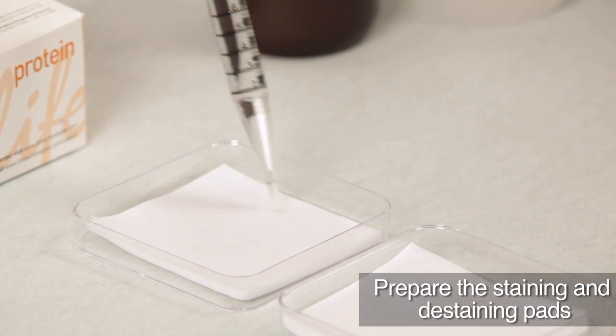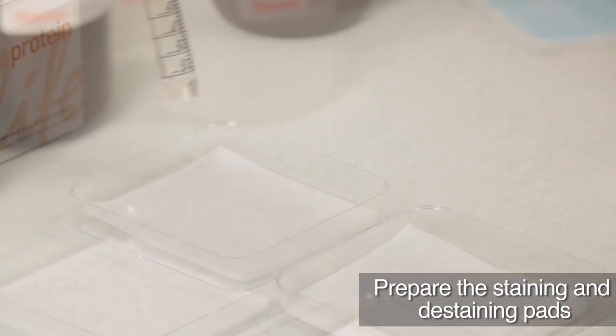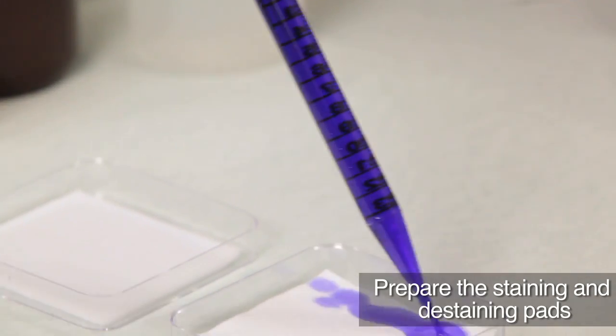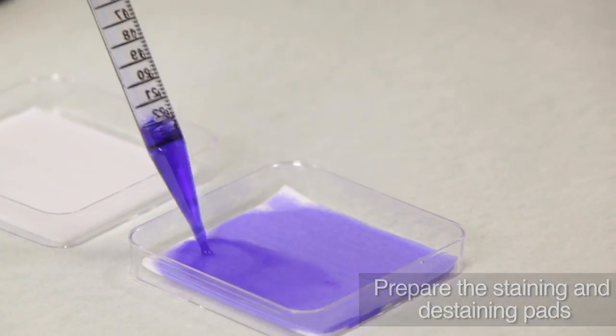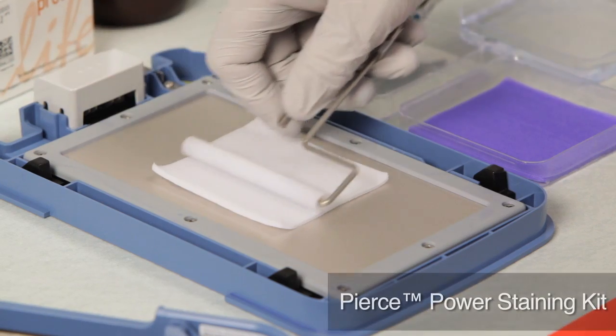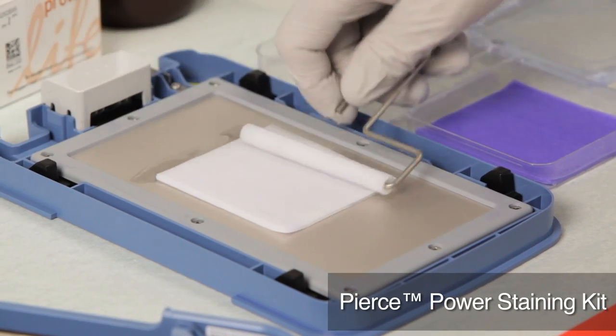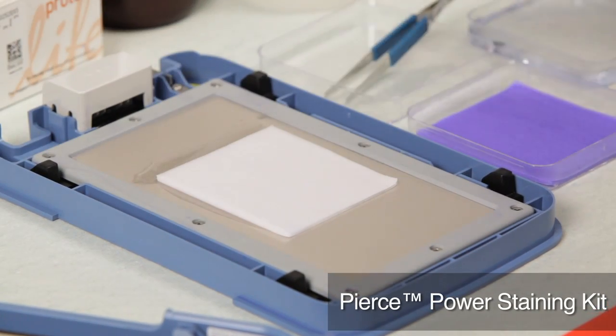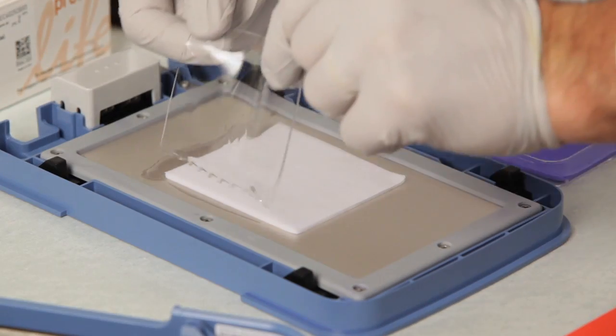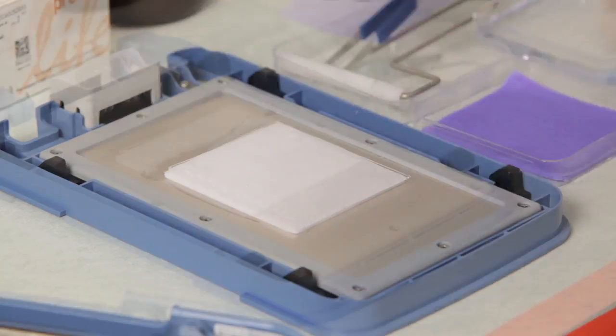Prepare the staining and de-staining pads by adding the Thermoscientific Pierce Power Stain Solution and de-stain solution to the gel pads respectively. Using the Power Staining Kit, assemble the staining sandwich on the anode starting with the de-staining pad followed by the pre-washed gel and the staining pad.